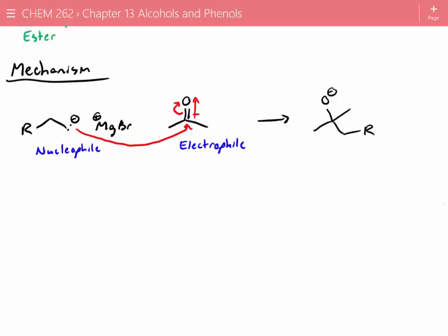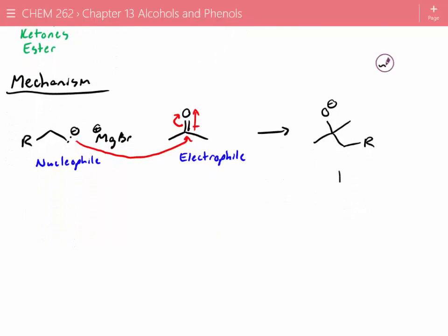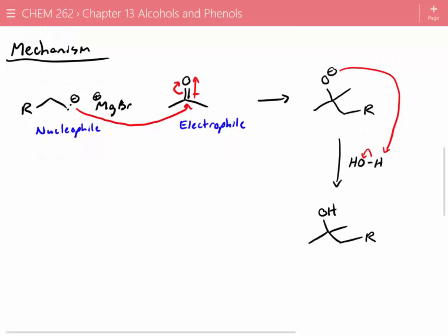And the Grignard reagent has just simply added in. So we're not quite done. If you saw up above, we always have that second step of adding water. So now when we add water to this reagent, or to this intermediate, the oxygen will reach over, grab a proton, and reform our base. So in this case, we are showing a reaction with acetone, which is a ketone, and we're able to form a tertiary alcohol. We were unable to do that using the sodium borohydride or lithium aluminum hydride method. But now we've actually formed a brand new carbon-carbon bond that we were unable to make before.